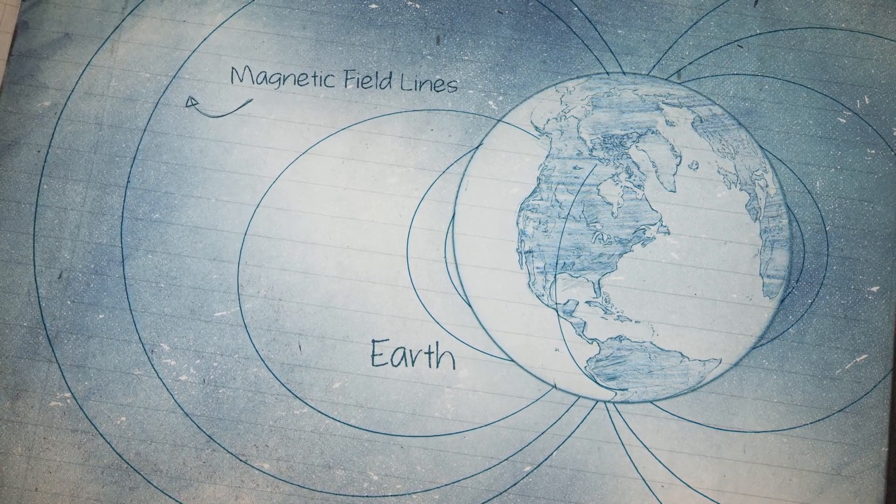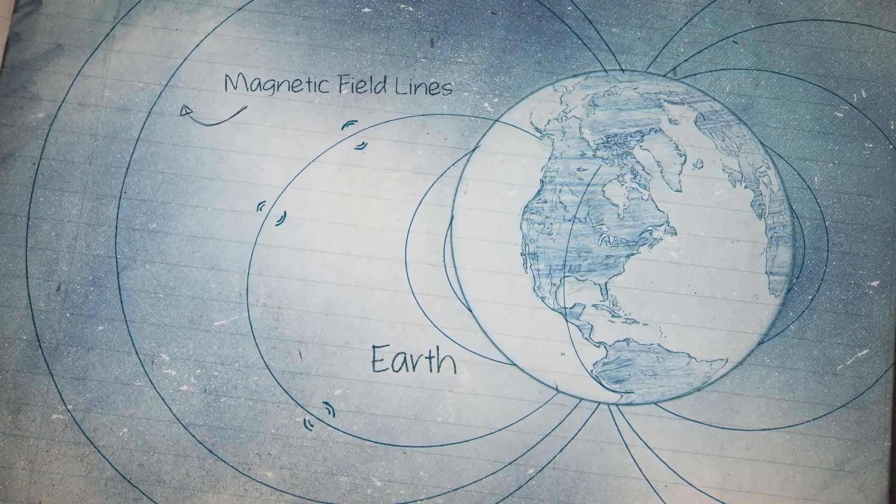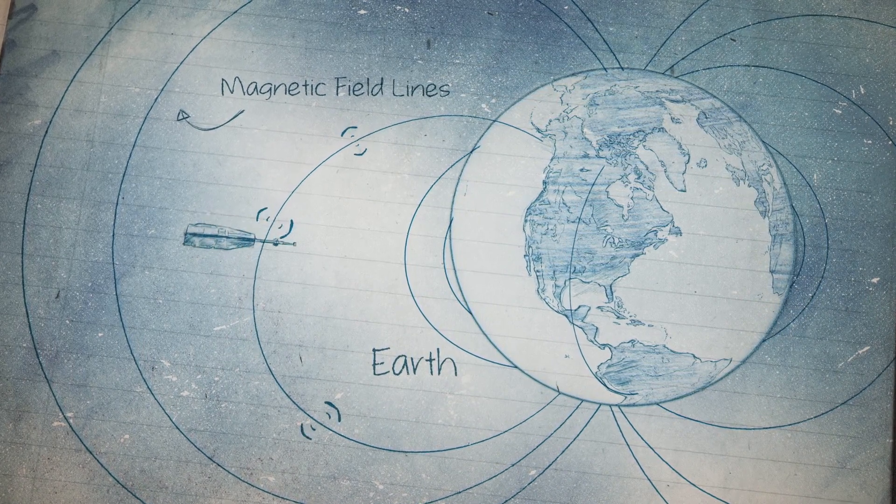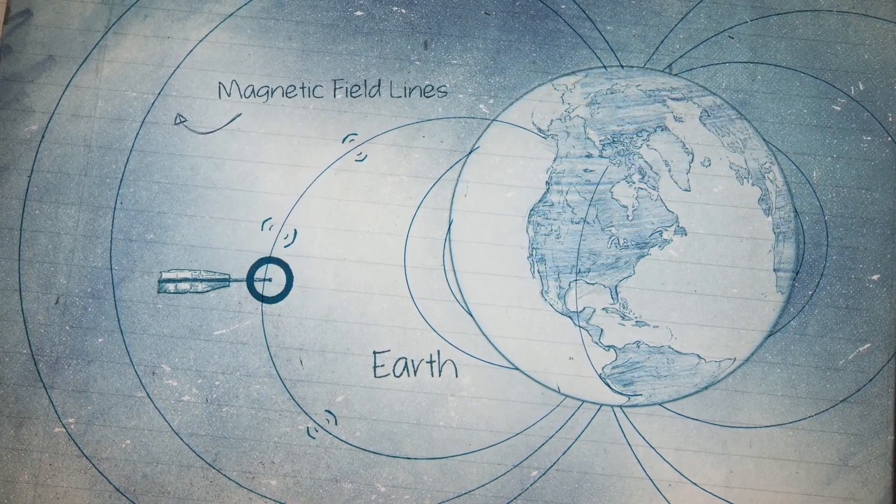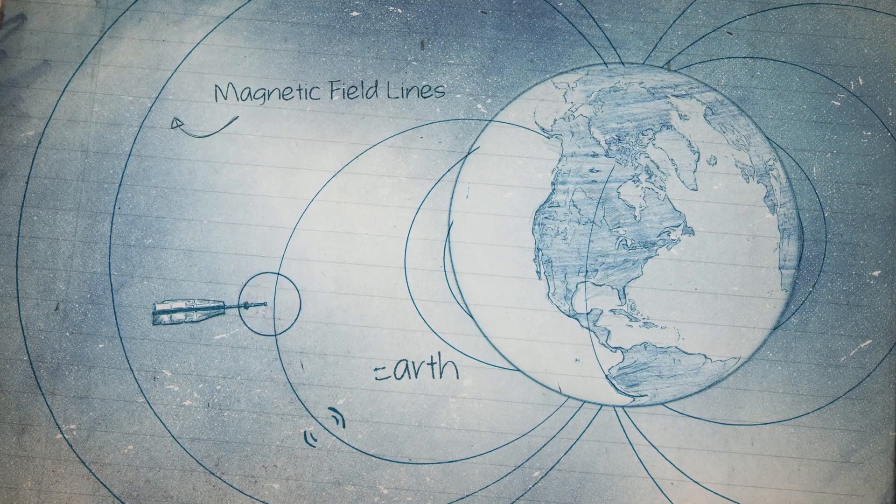The ever-changing field is full of fluctuations from many sources. Satellites observing these oscillations let scientists identify individual sources creating the magnetic field.